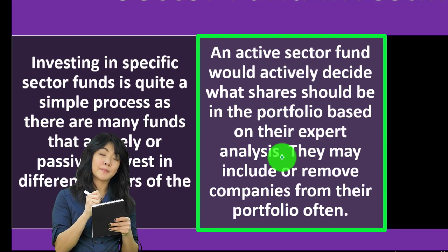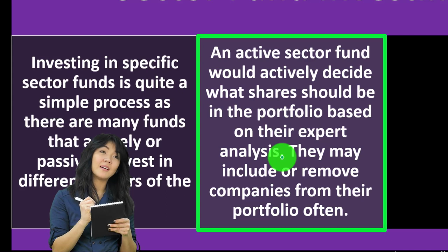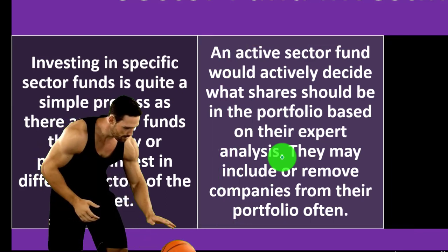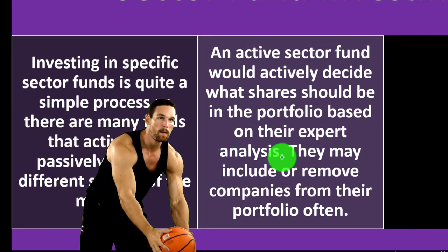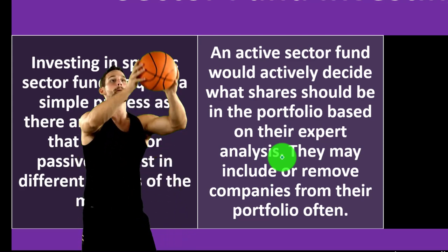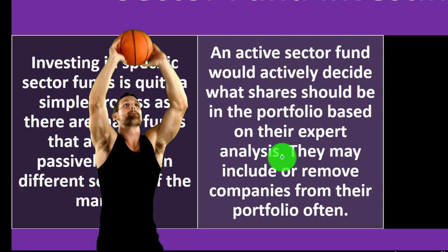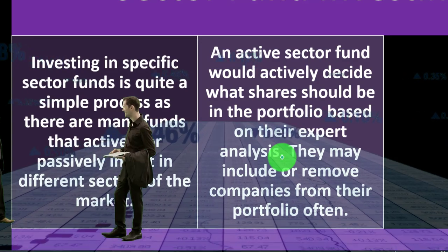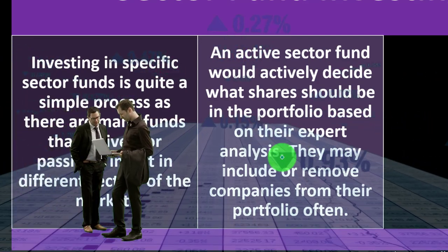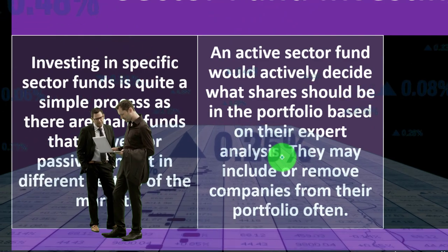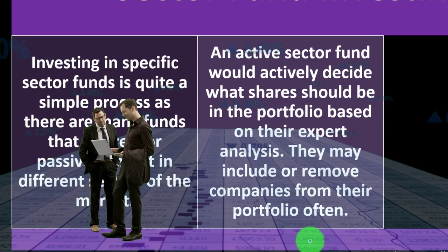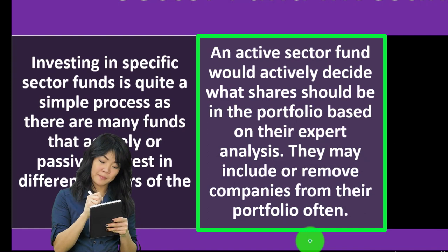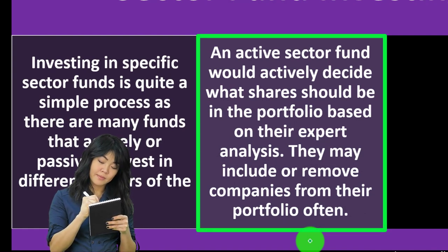To measure what the market is doing, we use an index — a sample of companies rather than tracking every one, similar to sampling a population. A passive investment simply ties to the index, which is cheaper than an active manager. The key question is: do you believe the active manager can beat the market and justify their cost, or do you invest in a passive or index fund? Active managers may frequently include or remove companies from their portfolio.